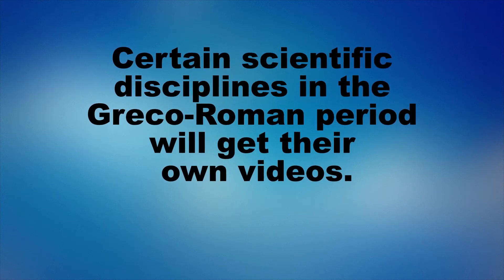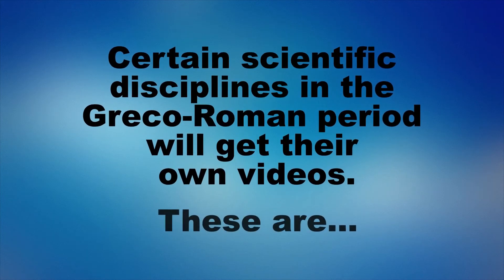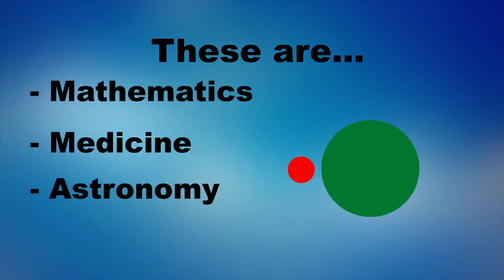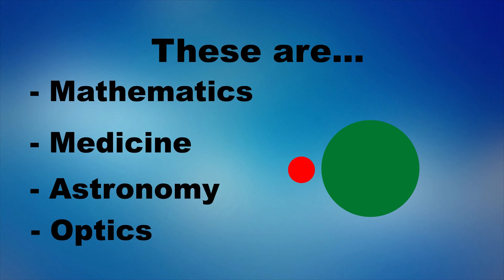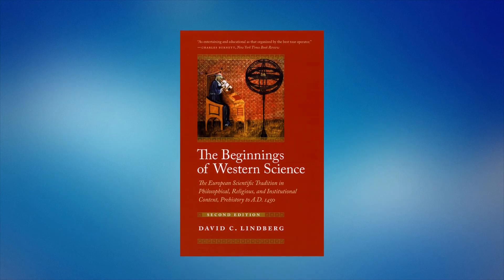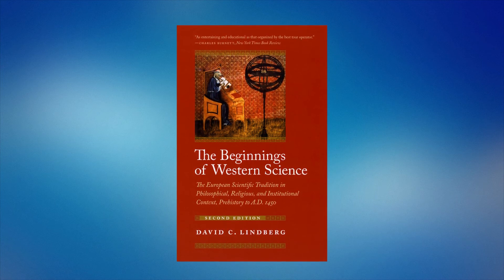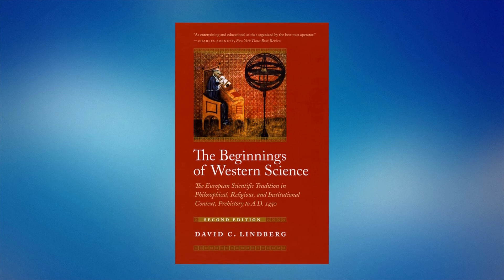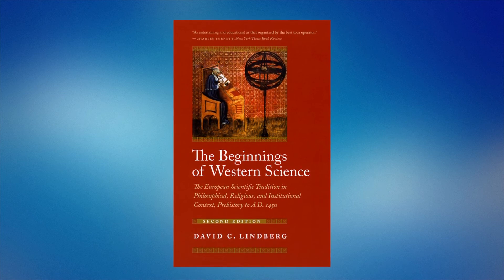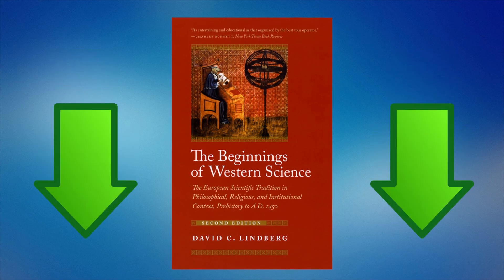Outside of covering different time periods and persons, I will also devote whole videos to the development of certain scientific disciplines in the Greco-Roman era. These disciplines are Mathematics, Medicine, Astronomy, and Optics, and they will get their own videos because unlike other aspects of ancient science, they are in essence the same throughout the Greco-Roman period, and are therefore best covered separately. Our main reference source for this series will be the second edition of David C. Lindberg's The Beginnings of Western Science, which arguably is one of the best textbooks on ancient and medieval science available. If any other literature is used, it will as always be referenced in the description.